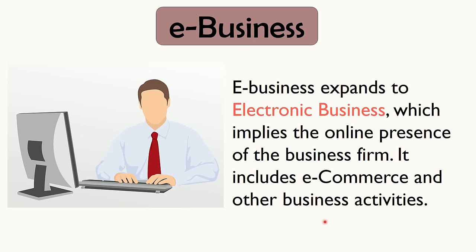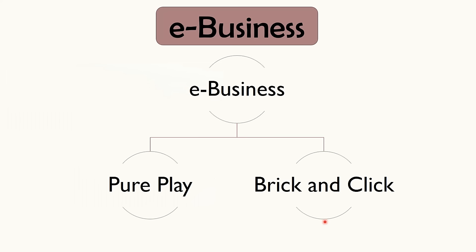E-business includes intra-business e-commerce and business to employee commerce, along with other types of e-commerce. Basically, there are two types of e-business: pure play and brick and click. Pure play is that form of e-business in which the business operates in online mode only, whereas brick and click is that form in which the business operates both in online and offline mode.